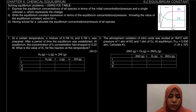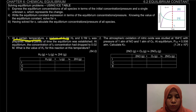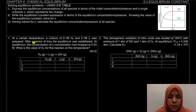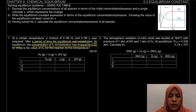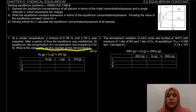First let's look at the question. Example number 1 on page 7: at a certain temperature, a mixture of 0.1 molar of H2 and 0.1 molar I2 was prepared. After a period of time the equilibrium was established, and at equilibrium the concentration of I2 had dropped to 0.02 molar. What is the value of KC for this reaction at this temperature?